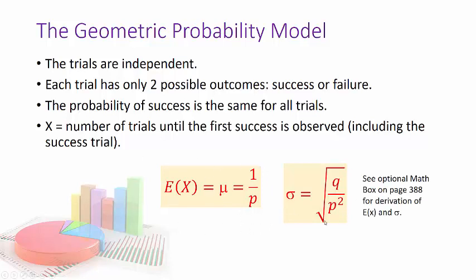We can logically reason out the expected value. For example, if rolling a die and looking for a 5, how many throws would you expect before getting a 5? Probably six — you'd cycle through each number. Sure, you could get a 5 on the first throw, or maybe not until the 12th, but on average we expect six throws. That's 1 over the probability: 1 divided by 1/6 equals 6.